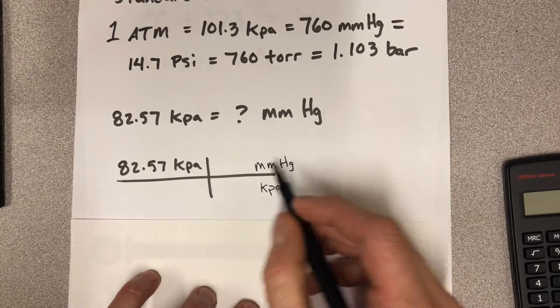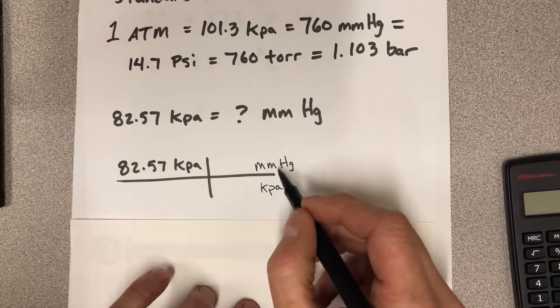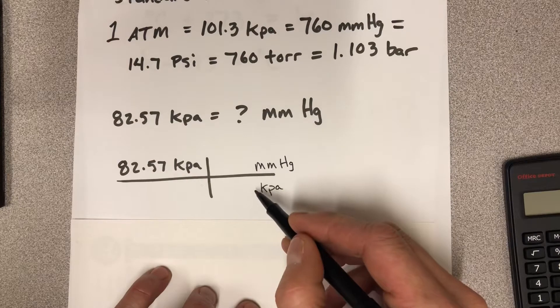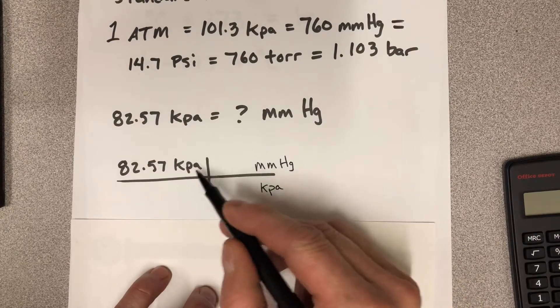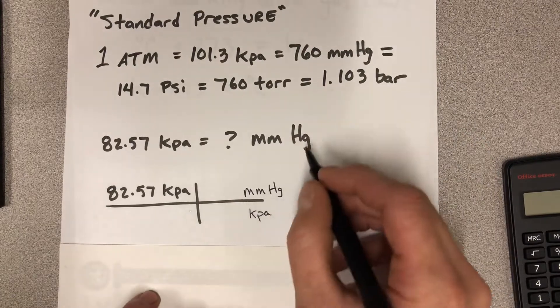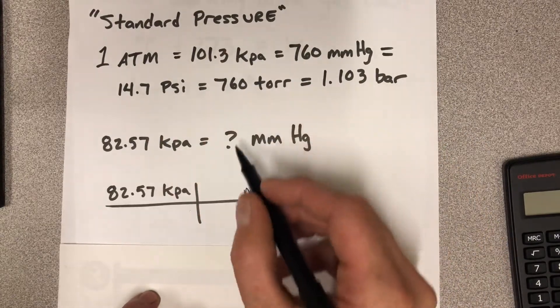We want kilopascals to go away and we want to be left with millimeters of mercury. So remember whatever unit you want to be left with goes on the top and the bottom is designed to cross away from what you are starting with. And then you just use the appropriate numbers here.